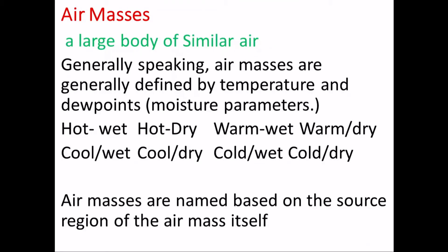Air masses are named based on where they start. If an air mass originates over an ocean, it's going to be called maritime. If it originates over a continent, it's going to be called continental.